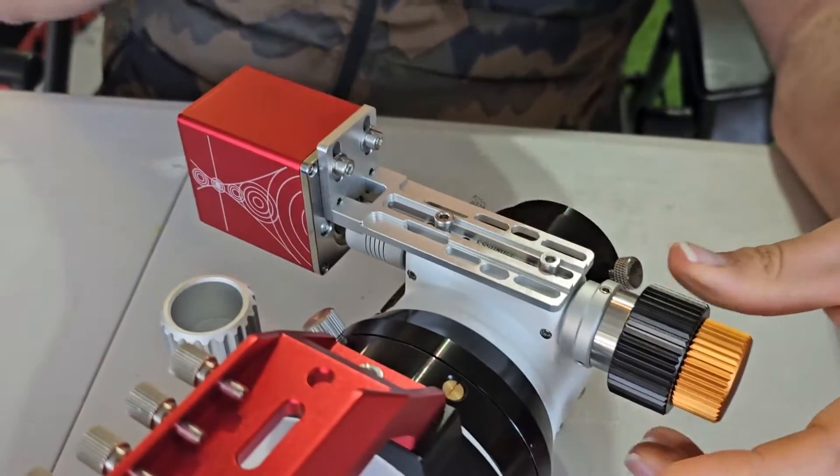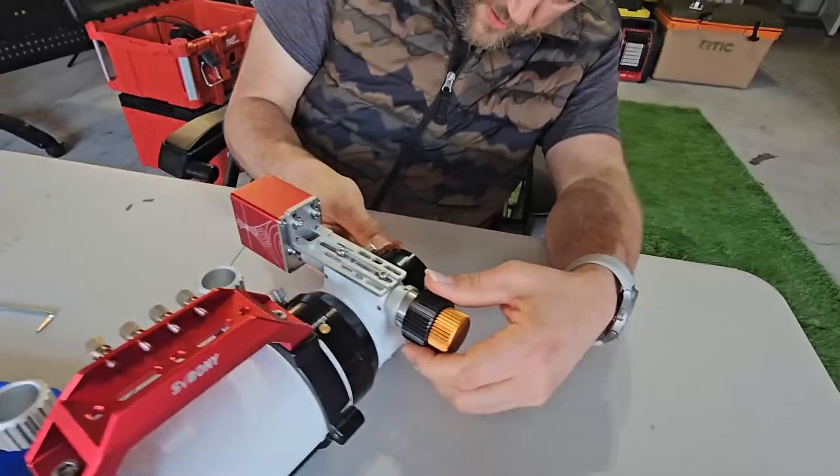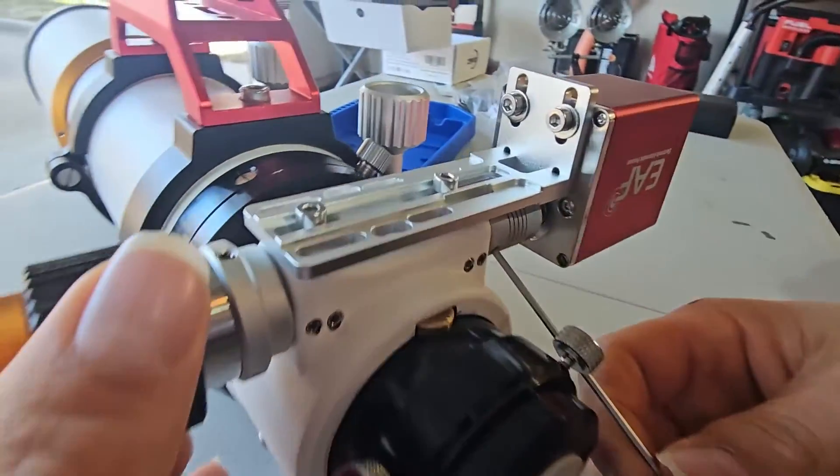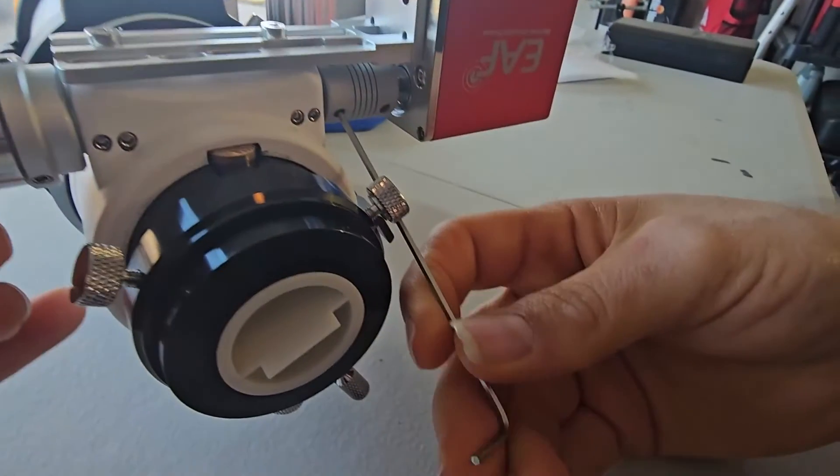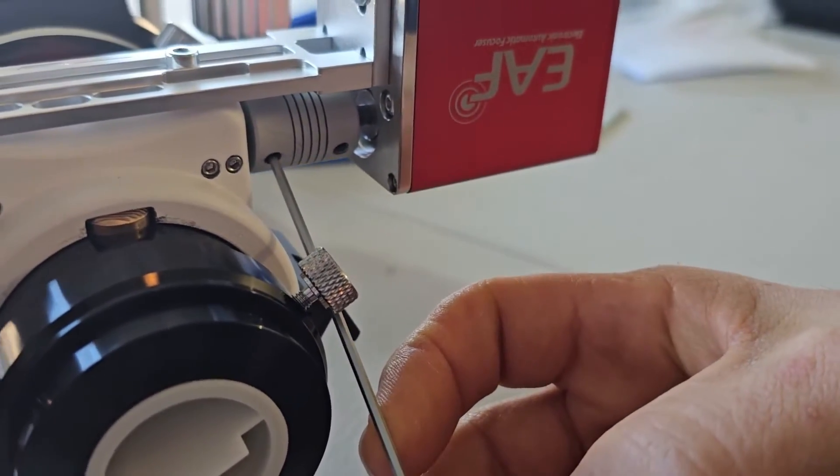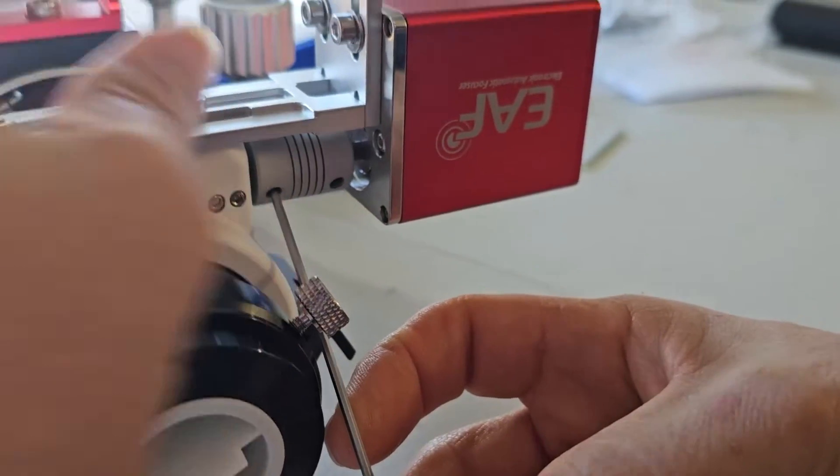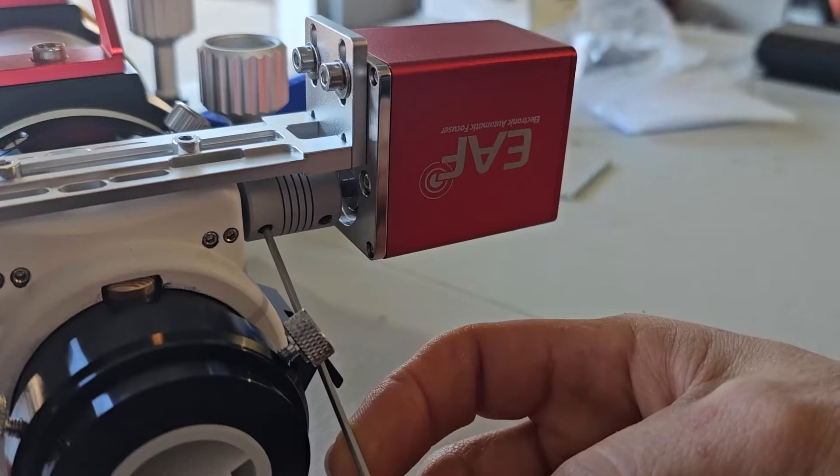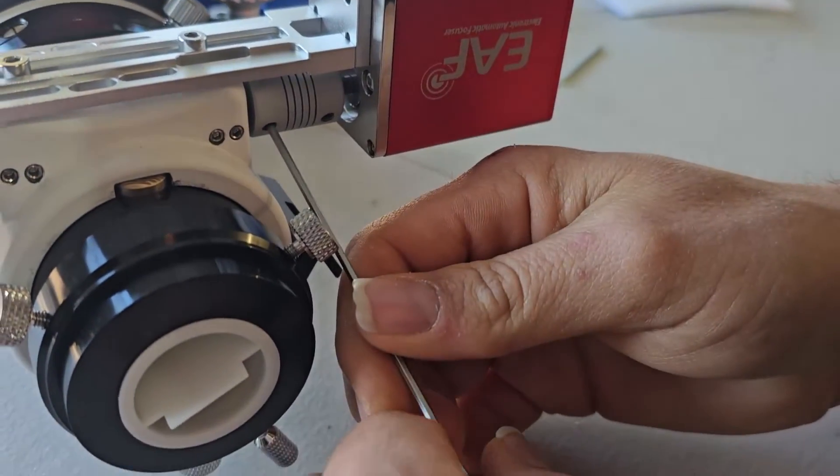And then we'll tighten up that last grub screw and we're going to slowly tighten it up while we kind of wiggle back and forth and make sure we're finding the flat part on the shaft on the telescope side. And we can see we left these bolts loose so we can see the motor rotating so we know we are on that flat spot. So we can go ahead and tighten that up.